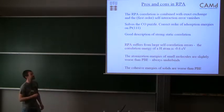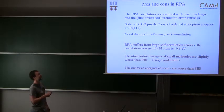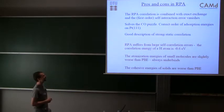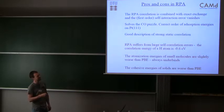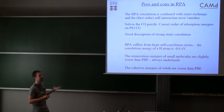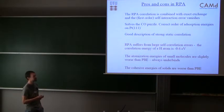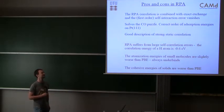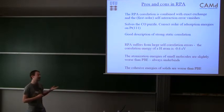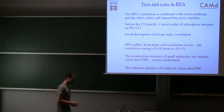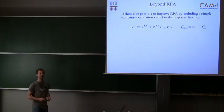The problems with RPA are, first of all, there's a very large self-correlation error. We don't have the first-order self-interaction error, but we have a higher order self-correlation. If you calculate the correlation energy of a hydrogen atom, you'll get 0.6 eV. If you didn't know anything and just saw these results, you'd probably just conclude that this method doesn't work because this number should be zero. It turns out that there's a very high degree of error cancellation when you consider energy differences, so atomization energies actually come out reasonable, but nevertheless they're a bit worse than PBE. We always have this underbinding, but also the cohesive energies of solids are much worse than PBE.